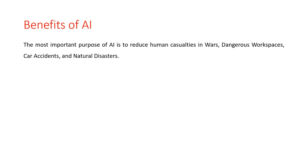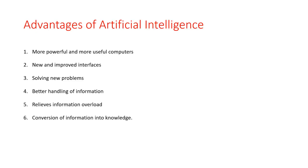The benefits of AI: the most important purpose of artificial intelligence is to reduce human casualties in wars, dangerous workspaces, car accidents, and natural disasters. The advantages of artificial intelligence include: more powerful and useful computers, new and improved interfaces, solving new problems, better handling of information, managing real-life information overload, and the conversion of information into knowledge.